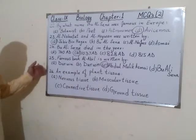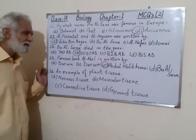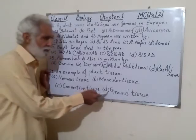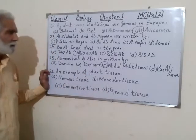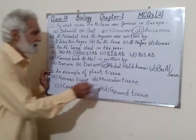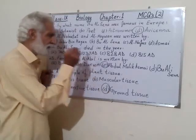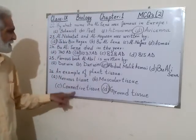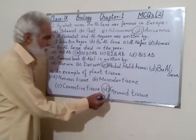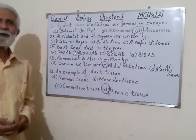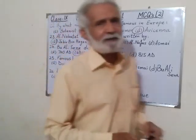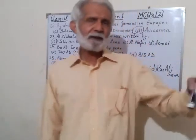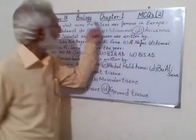Number 26: an example of plant tissue. Whenever the word 'plant' comes, ground tissue should come to your mind, because plants are related to the ground. So ground tissue is the example of plant tissue. Muscular, nervous, and connective tissues are something else. When plant comes to mind, ground tissue is the answer. These are all 26 MCQs.